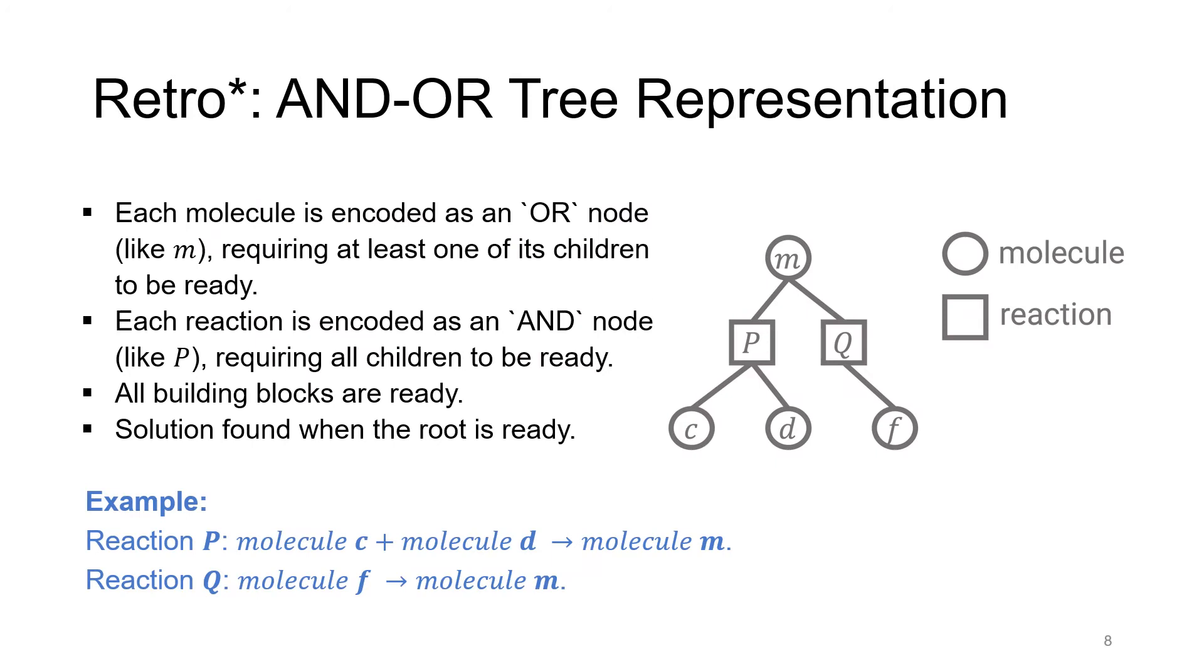RetroStar is based on the AND/OR tree representation for the search space. With this type of representation, we are able to explicitly model the relationships between the molecules and the reactions. This is because each molecule can be synthesized using any one of its children's reactions, and each reaction requires all of its children's reactants to be ready, to be synthesizable. In this example, there are two possible ways to synthesize molecule N, which is through reaction P and through reaction Q. The reactants of P are C and D, and the reactant of Q is F. With this type of representation, we are able to tell whether the root node, which is the target molecule, is synthesizable by just looking at the tree.